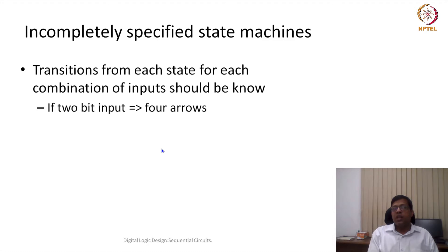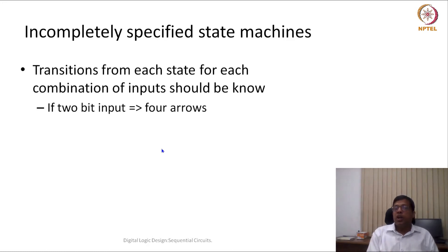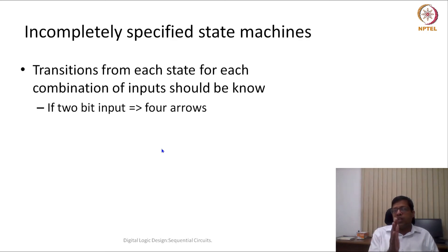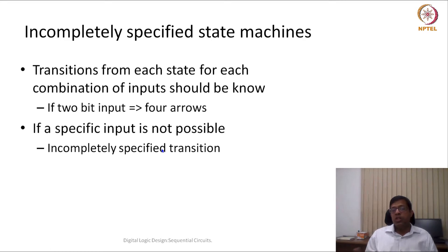When we were studying combinational circuits there were also incompletely specified functions. A function is incompletely specified when certain input combinations are not possible. In a very similar way, a state machine would be incompletely specified when a particular possibility of inputs is not there.